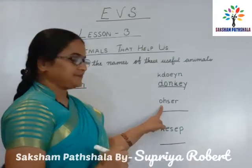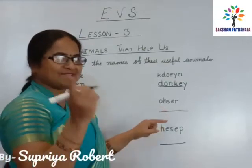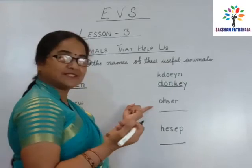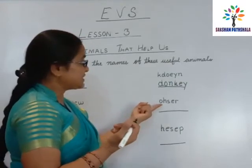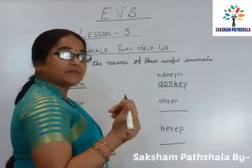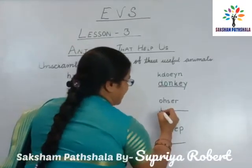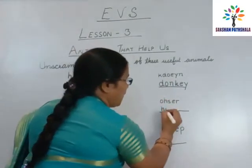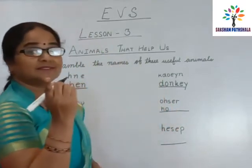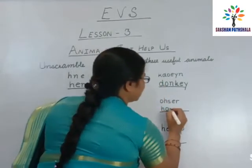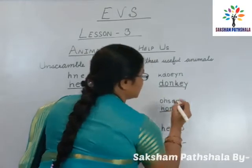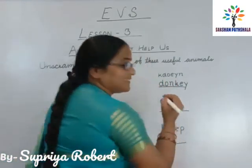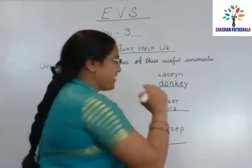Now here — yes, very good. Horse. But how will we write horse? First letter H, then O, then R, then S, then E. Very good.